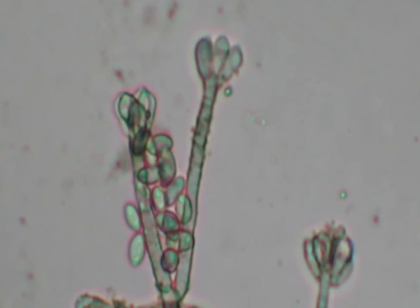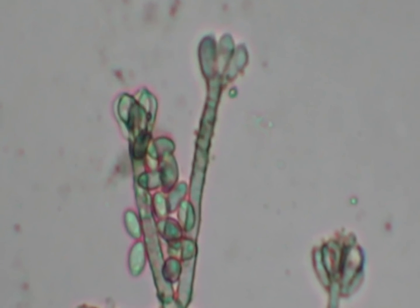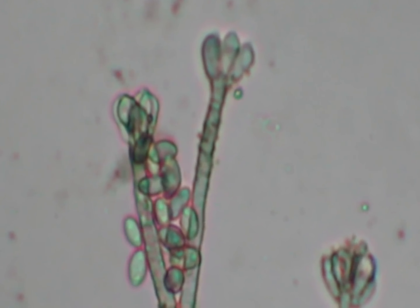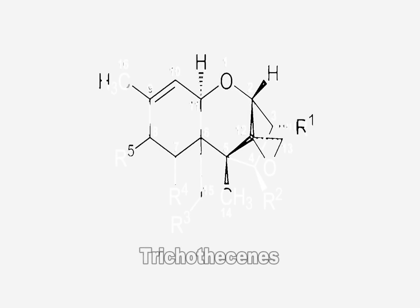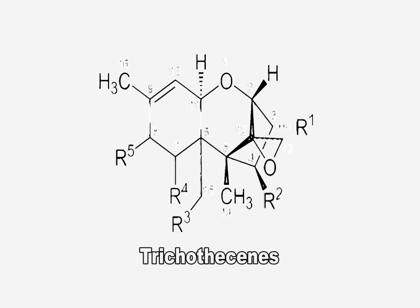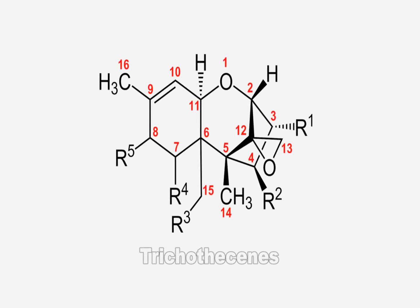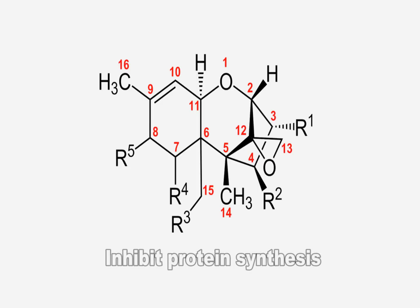Stachybotrys has been found to have the ability to produce mycotoxins known as trichothecenes. Trichothecenes are powerful inhibitors of protein synthesis. They do this by reacting with components of the ribosomes, the structure within the cell where proteins are made.